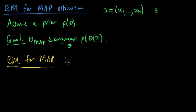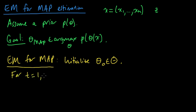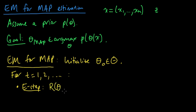The algorithm is very similar to the algorithm for MLE. We initialize theta_0 to be some parameter in the space of all parameters. And then for t equals 1, 2, 3, and so on until convergence, we do the following two steps. First we have the E step.